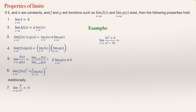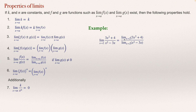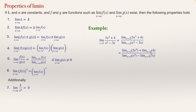The limit of a quotient equals the limit of the numerator divided by the limit of the denominator. So we write: the limit as x approaches 2 of (3x² + 4) divided by the limit as x approaches 2 of (x² − 3x). The numerator is a sum, so by property 3, the limit of the sum equals the limit of the first term plus the limit of the second. The same applies to the denominator — the limit of the expression equals the limit of the first term minus the limit of the second.